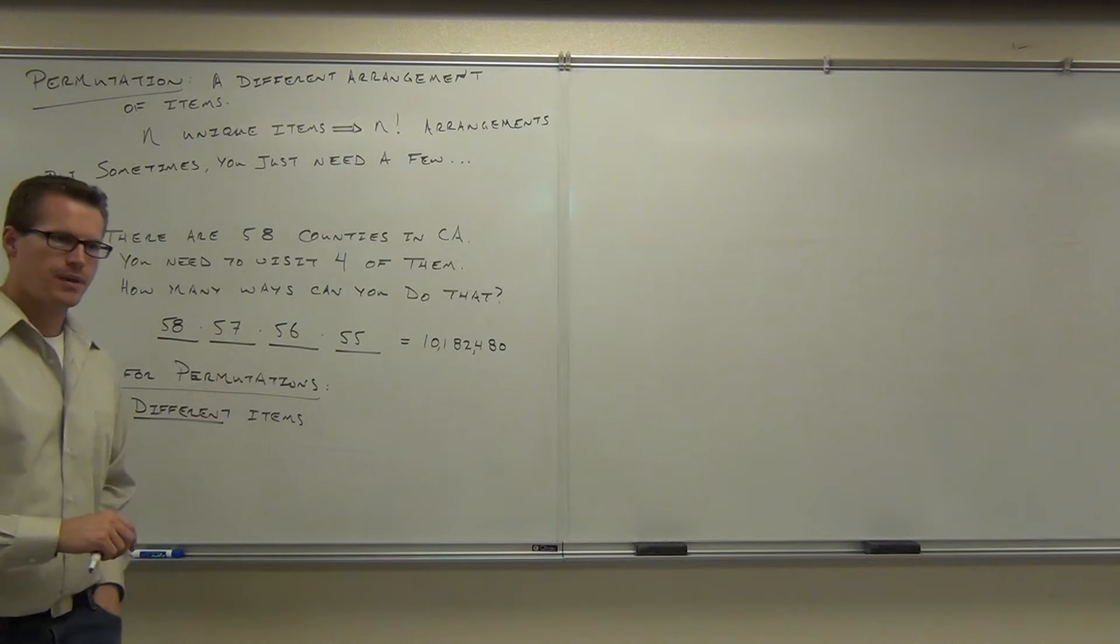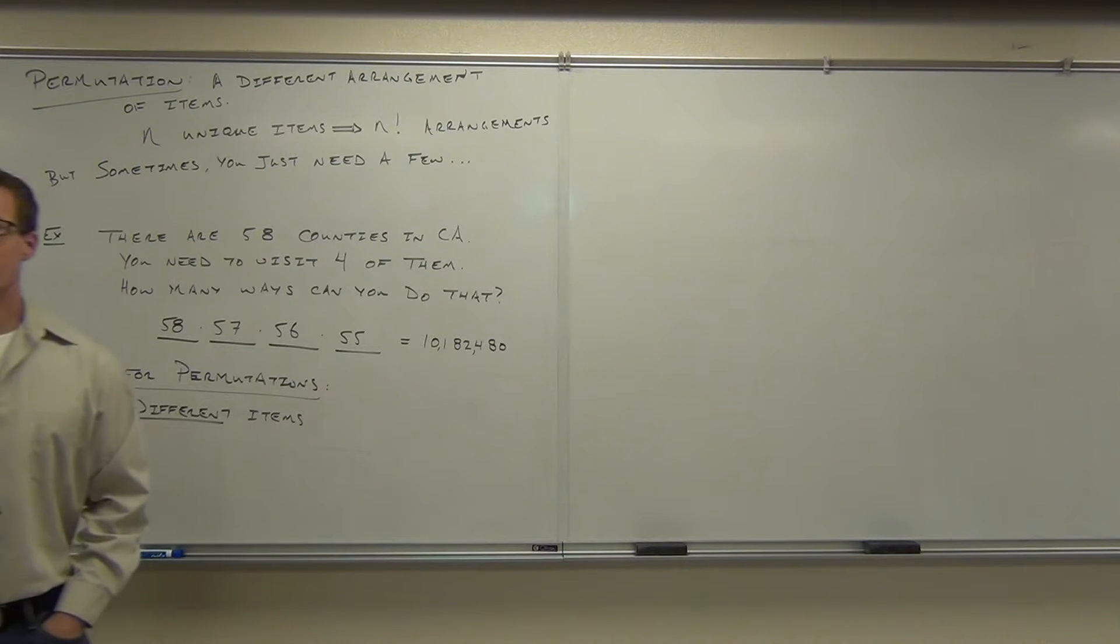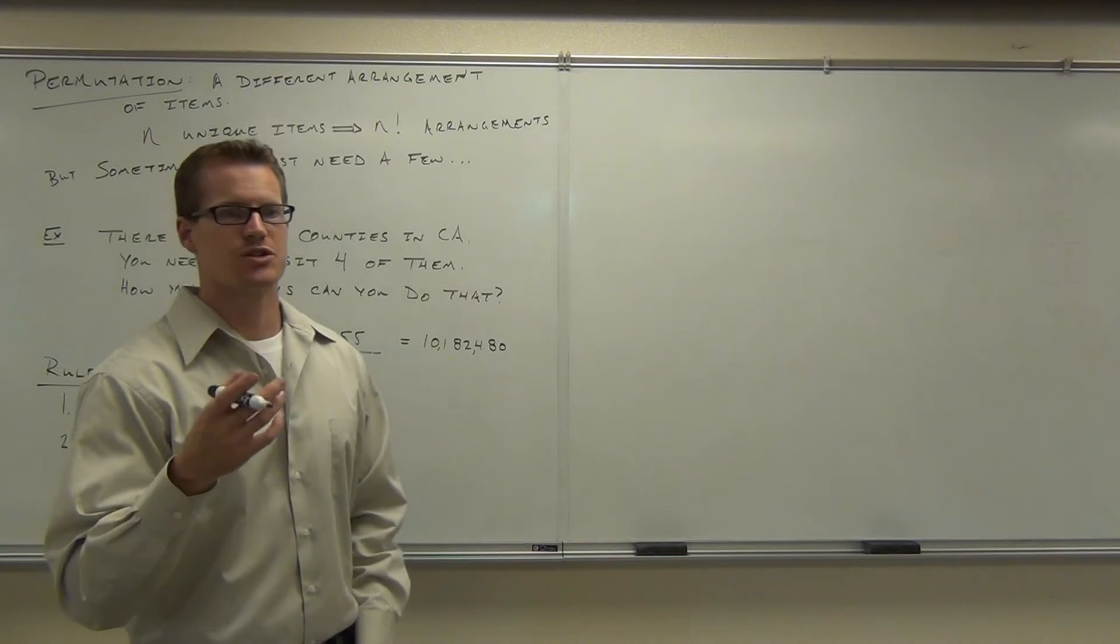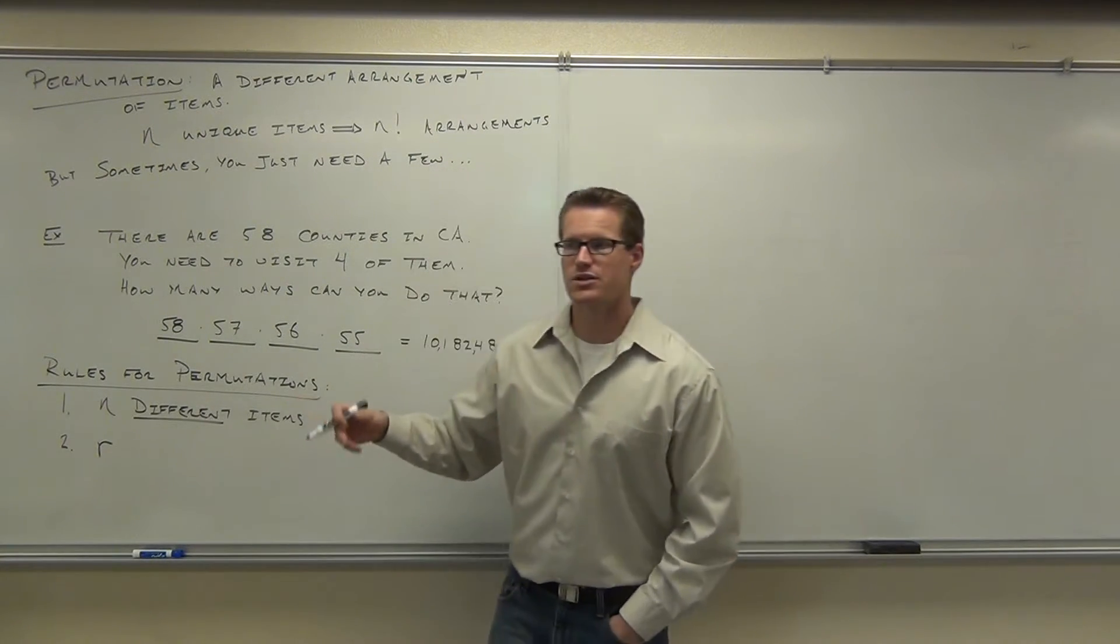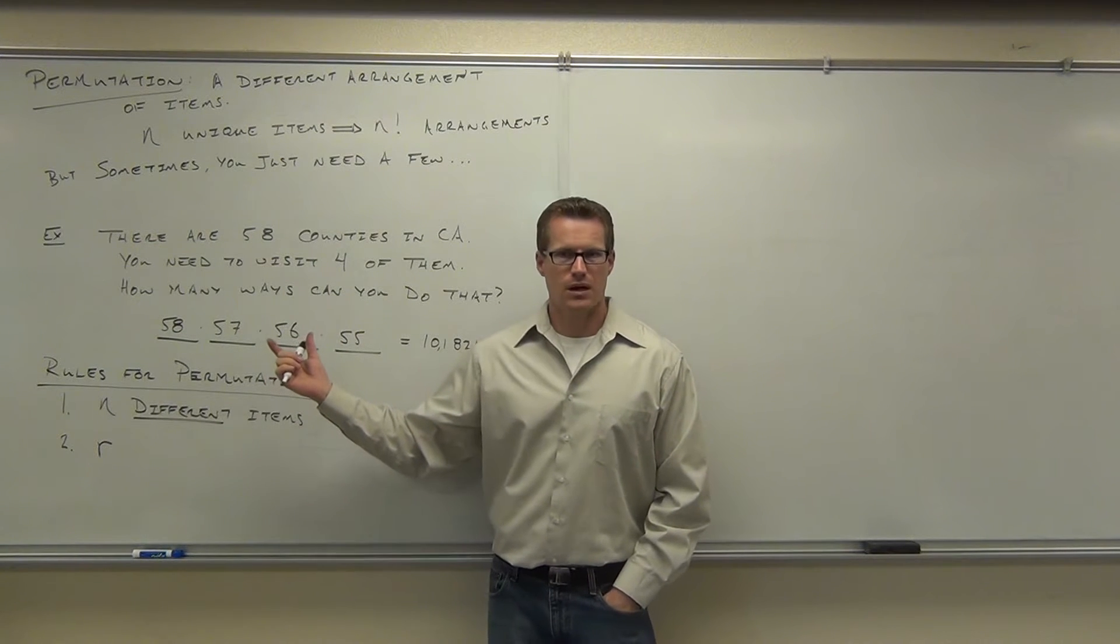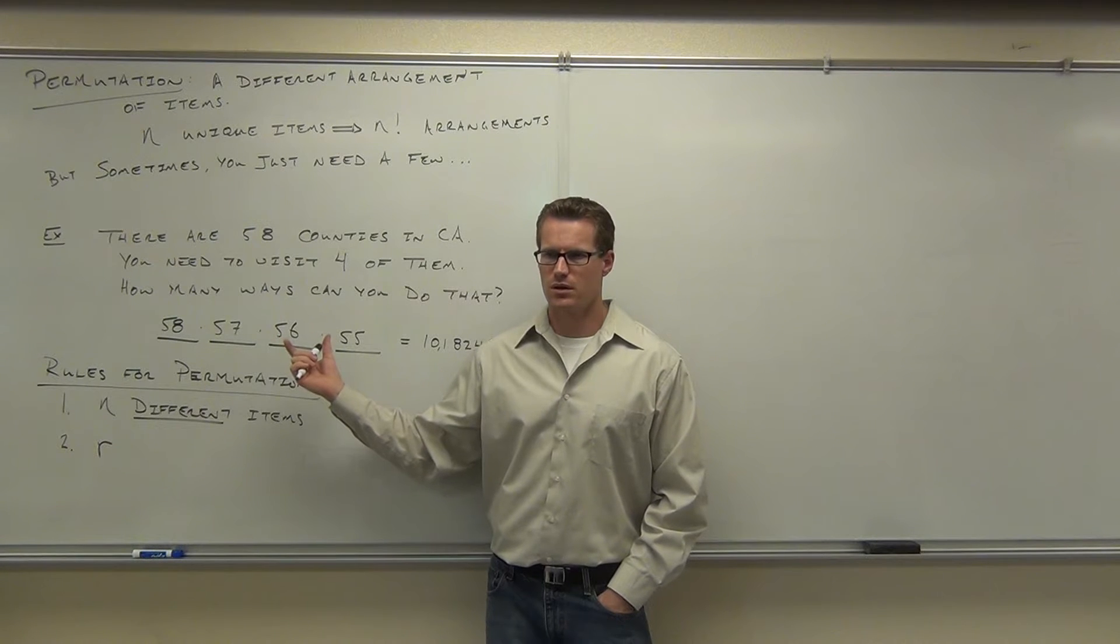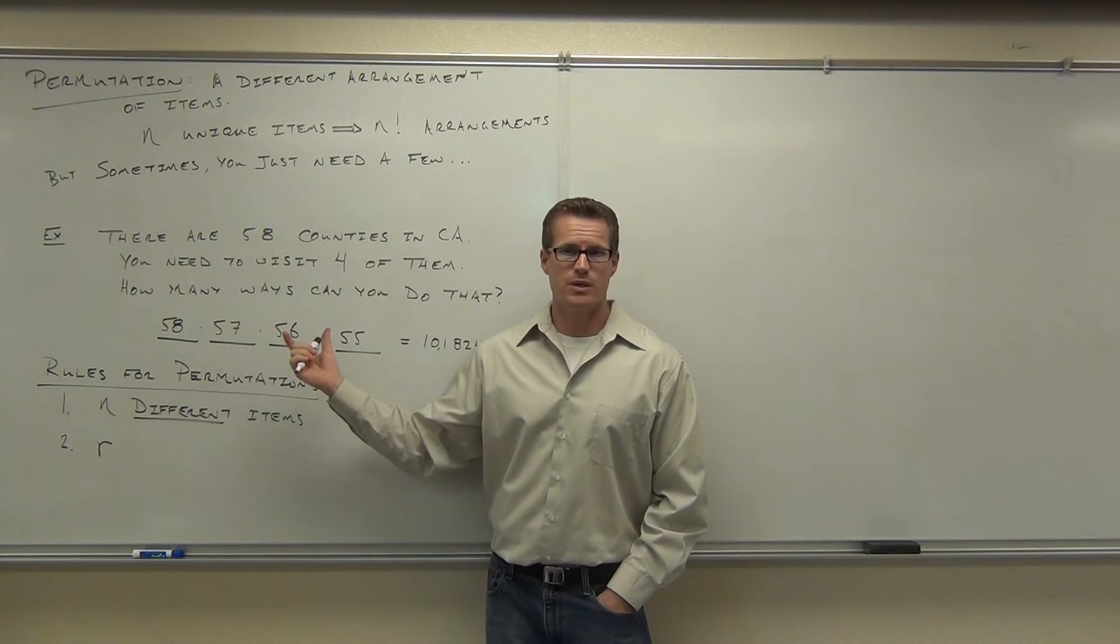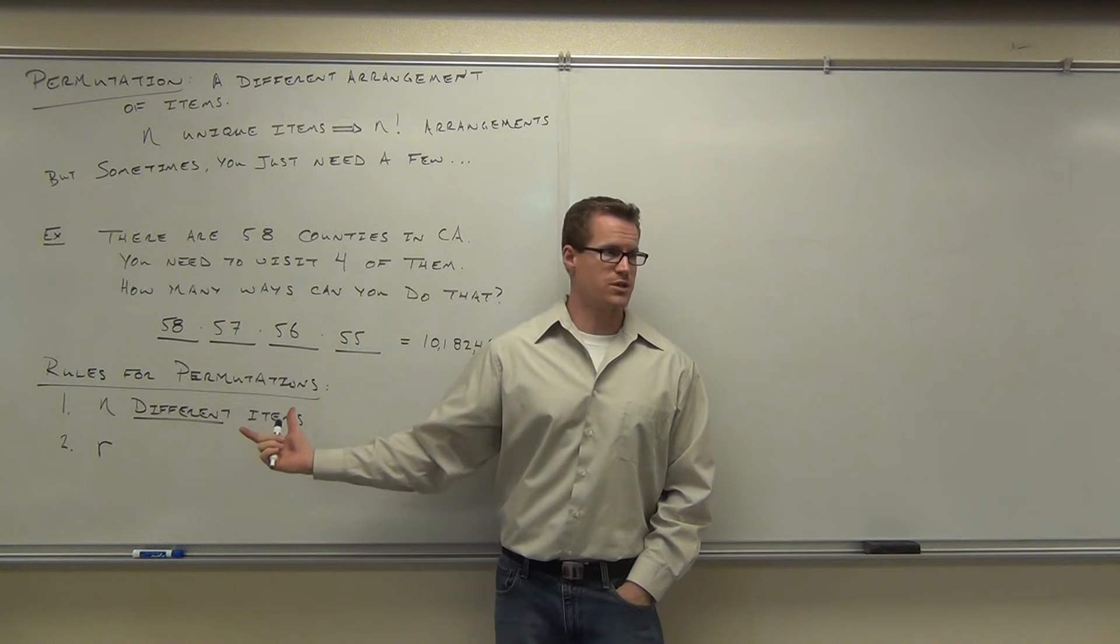I'm going to give you another letter. I'm going to give you the letter R. R is the number of items you're selecting out of n to arrange. So, for instance, in our example up here on the board, our n, how much was our n? How many different counties were there? 58. N was 58. How many did we choose to arrange? 4. R would be 4.